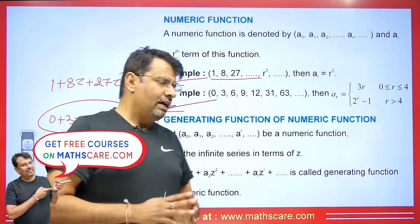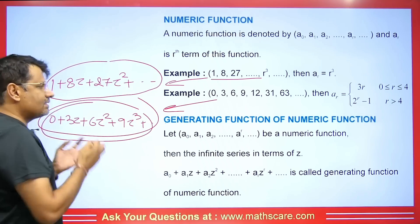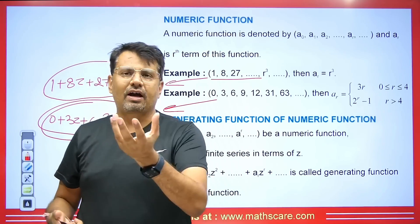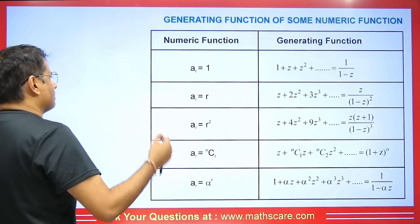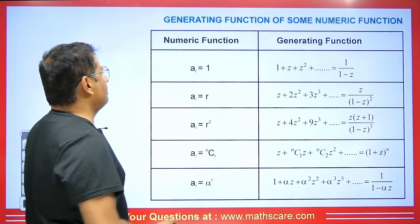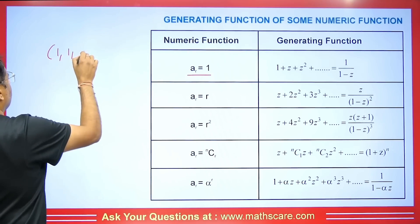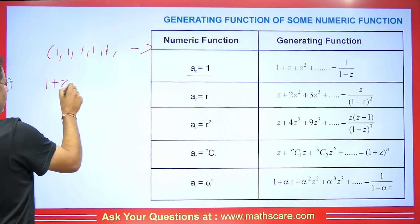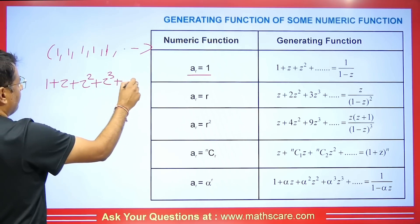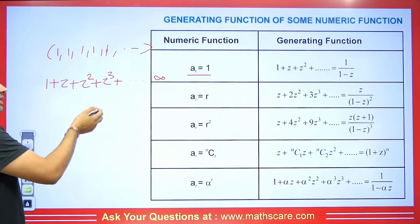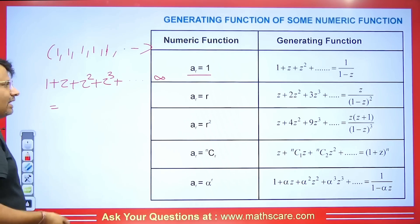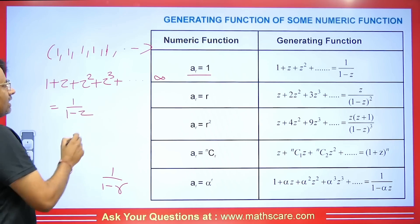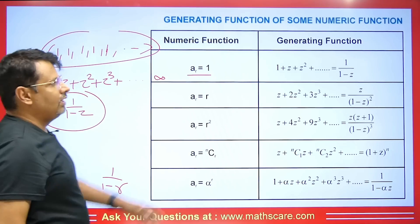Many exam questions are based on this. When a series comes to us, we solve it and find its sum — that sum is the generating function. For example, if the numeric function is 1, 1, 1, 1, ... then multiplying by powers of Z gives 1 + Z + Z² + Z³ + ... This is an infinite geometric series whose sum is 1/(1−Z). So 1/(1−Z) is the generating function of this numeric function.